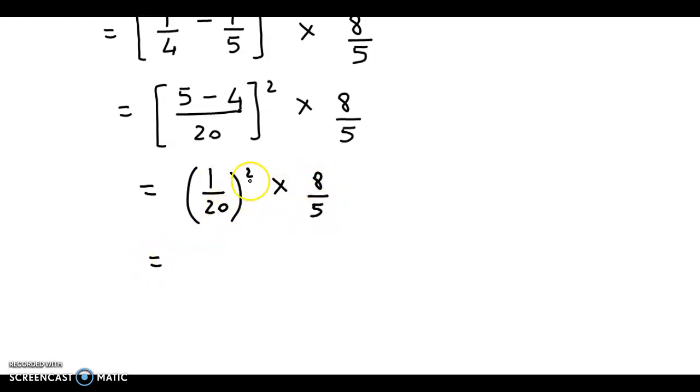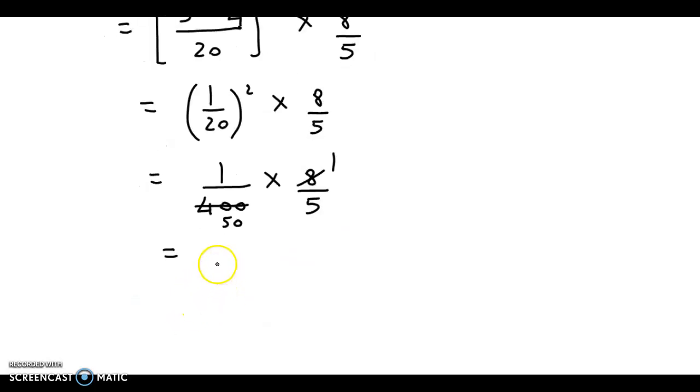Now 1 by 20 the whole square is 1 by 400, into 8 upon 5. Now we can reduce this: 8 into 50 is 400. So our final value is 1 upon 250. The final answer is 1 by 250.